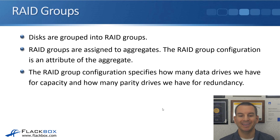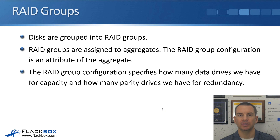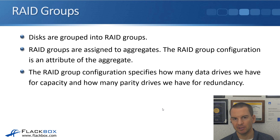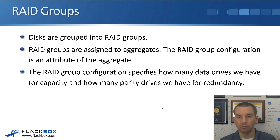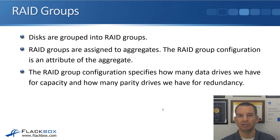Your disks are grouped into RAID groups, and then the RAID groups are assigned to aggregates. The RAID group configuration is an attribute of the aggregate. In System Manager, you'll see a page for your disks and a page for your aggregates, but there's not a separate page for RAID groups. The RAID group configuration is found on the aggregate page. It specifies how many data drives you have for capacity and how many parity drives you have for redundancy. If you want a refresher on RAID, that's available in the intro to SAN and NAS course.